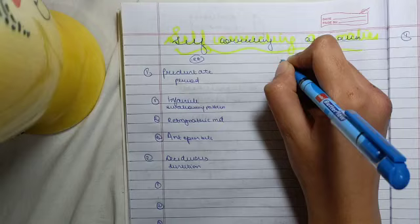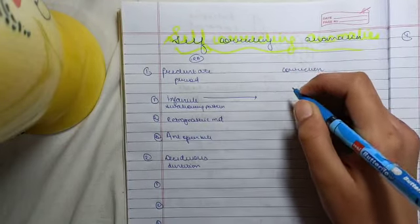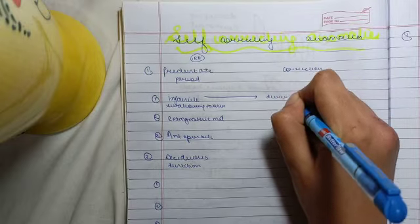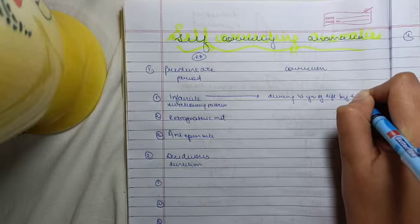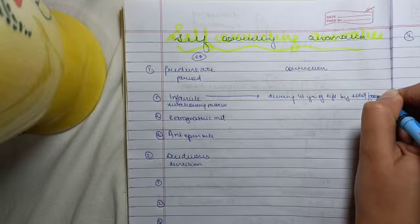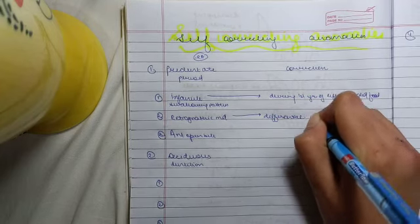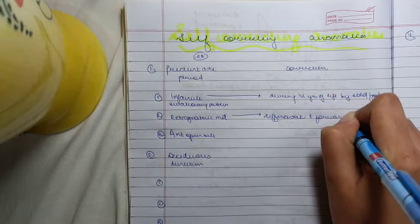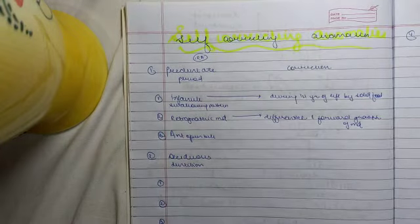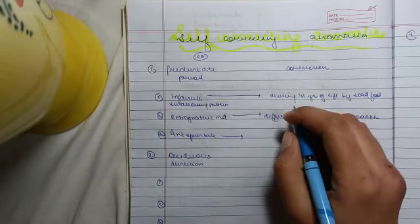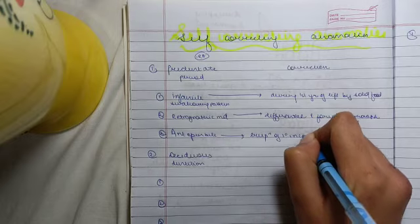Also, we will discuss how they get corrected. Infantile swallow is basically corrected during the first year of life by solid foods. Then, retrogonathic mandible is corrected by the differential and forward growth of mandible. Then, anterior open bite is corrected by the eruption of the primary incisors.